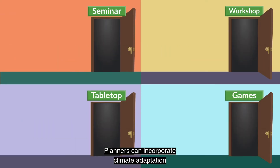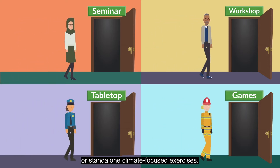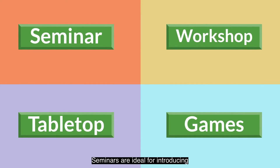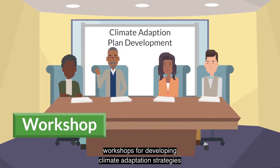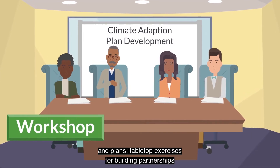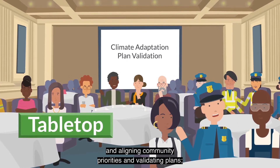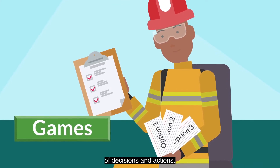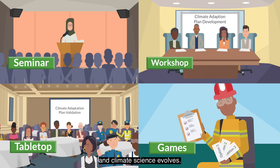Planners can incorporate climate adaptation and hazard mitigation into existing or stand-alone climate-focused exercises. They can consider a range of discussion-based exercises: seminars, ideal for introducing new climate-related concepts; workshops for developing climate adaptation strategies and plans; tabletop exercises for building partnerships, aligning community priorities, and validating plans; and games for exploring consequences of decisions and actions. Exercises can be used in the early stages of climate adaptation planning and conducted iteratively as plans mature and climate science evolves.